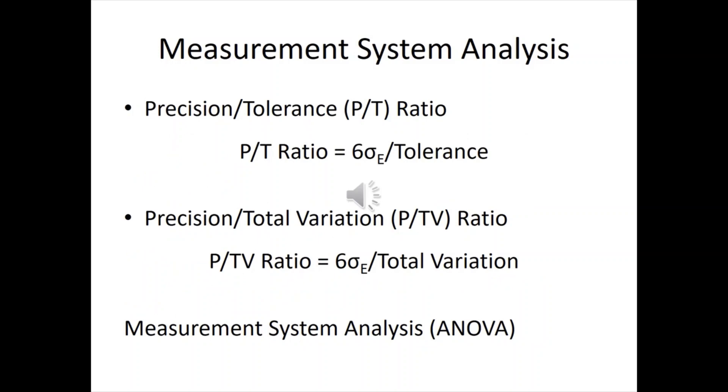Some different types of ways of analyzing your measurement. First one is precision to tolerance ratio. And what you do is you take a reading of a certain part and measure how much that varies and get your standard deviation. So you want to take six times that variation and divide it by your tolerance. If you've got less than one, you've got some issues here. Or more than one, you've got some issues. I'm sorry, more than one.